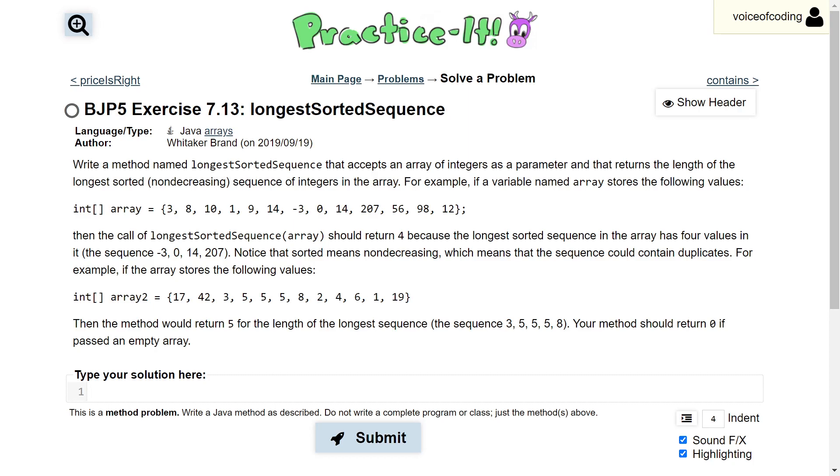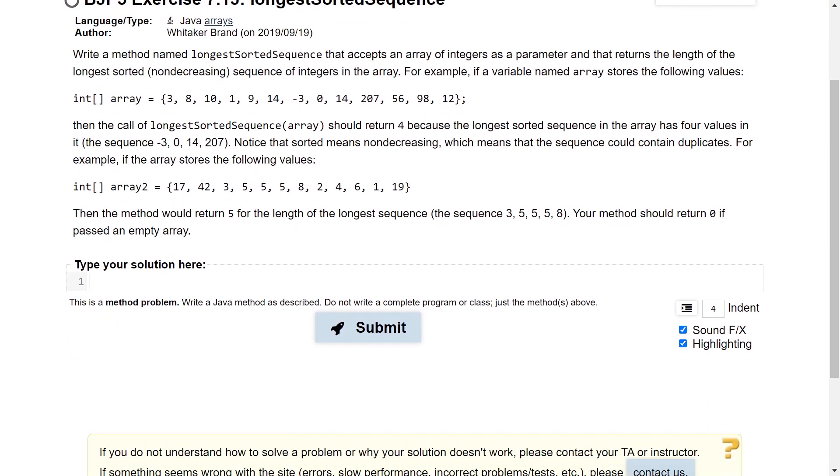Your method should return 0 if past an empty array. So this problem is pretty self-explanatory. We're just looking for the longest sequence of numbers that is already in order from smallest to largest. And it does say that the sequence is allowed to contain duplicates, so as long as the numbers just aren't decreasing.